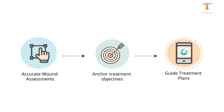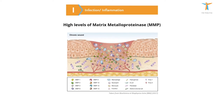For example, matrix metalloproteinases (MMPs) are a group of enzymes that feature in chronic wounds. Although MMPs play important roles in restructuring and repairing wounds, high levels of MMPs can be blamed for a cascade of events.